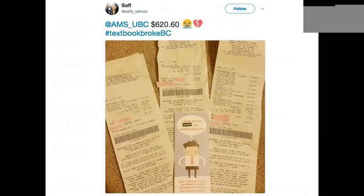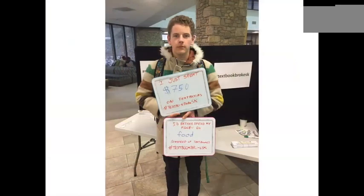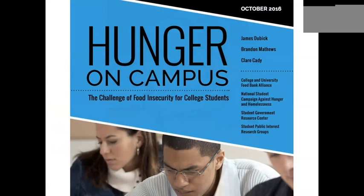Students tweet: 'I spent $650 on textbooks, I could have spent that on rent' from Alberta; '$750 on textbooks — I'd rather spend my money on food' from Saskatchewan. Students have little choice about paying tuition, but they can choose not to buy required textbooks. Similarly, they can't avoid rent, but they can starve themselves — and they do. Close to 50% of students in a nationally representative survey reported some degree of food insecurity in the preceding 30 days. The food pantry at UBC has seen a 100% increase in use over the last few years.